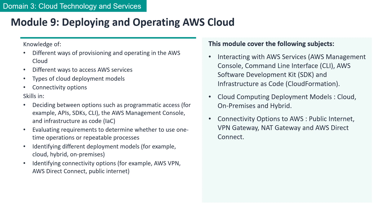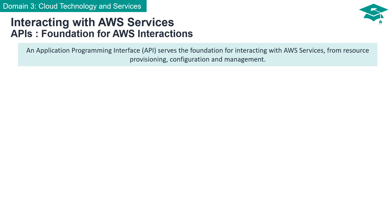Let's get started. There are different ways of interacting with AWS services, which are vital for AWS Cloud Resource Provisioning, Configuration, and Management. The API, or Application Programming Interface, serves as the foundation to interact with AWS services. It allows us to invoke AWS APIs for resource provisioning, configuration, and management.